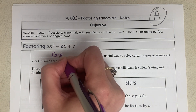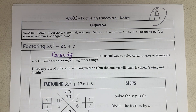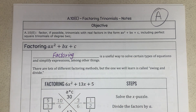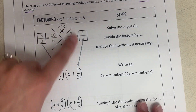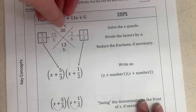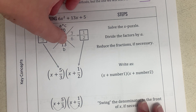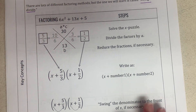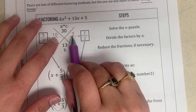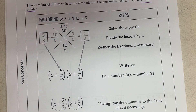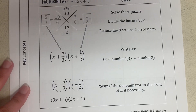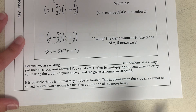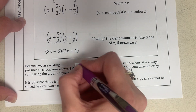There are a lot of different factoring methods. This one is called swing and divide. You're probably familiar with the X puzzle — you already know how to get the top number, which is a times c, and the bottom number b, and then find two numbers. We are using this method today to factor, which is super easy because we are writing equivalent expressions.